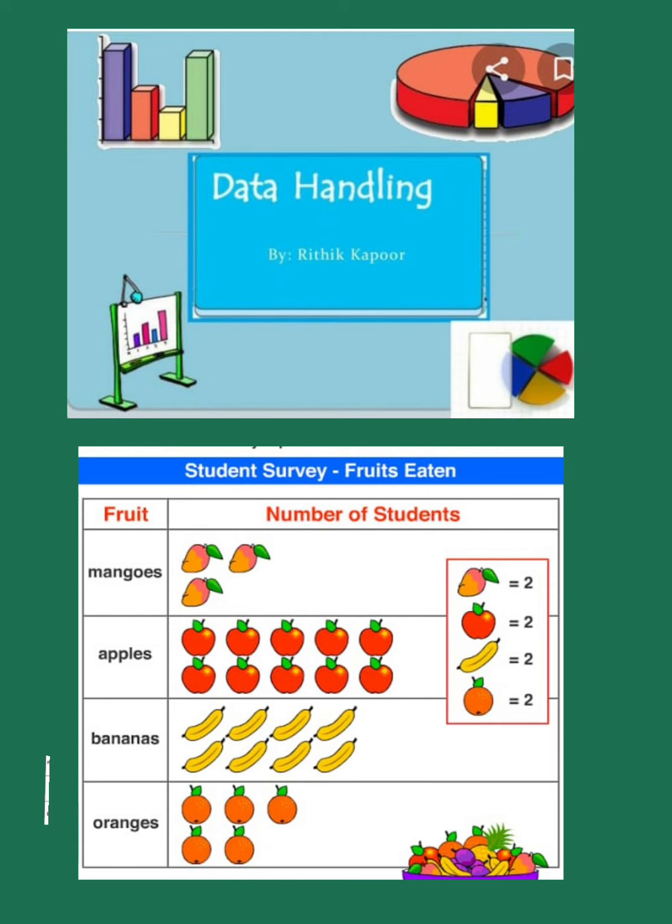Similarly about bananas, how many bananas are given? Eight bananas are given, and in the bracket it is specified one banana means two. So if eight bananas is there, total how many students does it stand for? It stands for 16, very good. So 16 kids eat bananas.